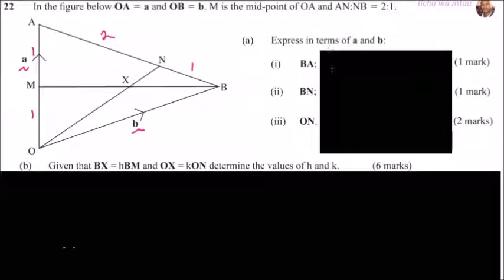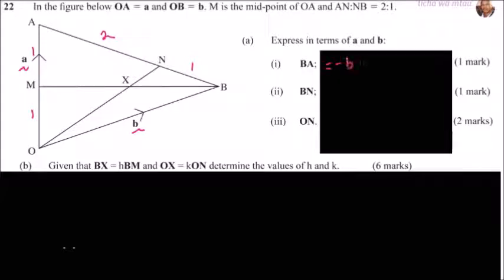We are told to express BA in terms of a and b. When you do that, you describe the movement from B to A. You can pass through O — from B to O, then O to A. When you move from B to O, you are moving against vector b, so that gives minus b. From O to A is a, so plus a. Therefore BA equals a minus b.